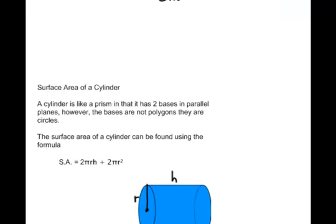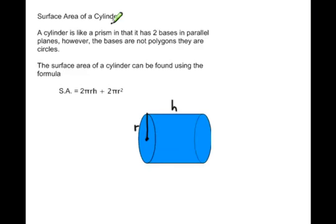Let's look at a cylinder. A cylinder is like a prism in that it has two bases in parallel planes. However, the bases are not polygons, they are circles. To find the surface area of the cylinder, we have a similar formula. We have circumference, which is 2πr, times h, the height, plus 2 times the area of the base, which is πr².